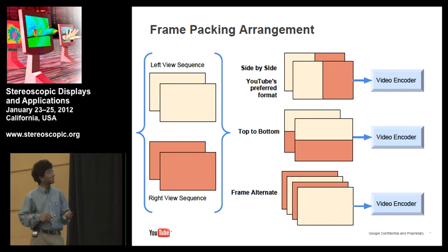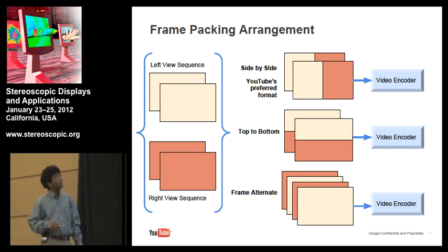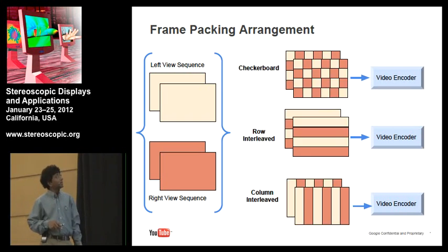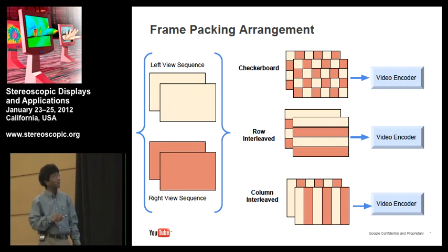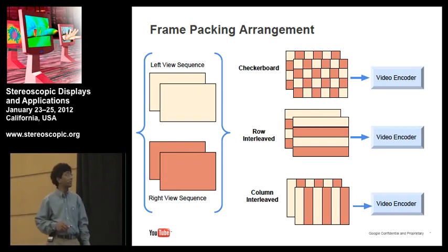A top-bottom arrangement does the subsampling vertically as opposed to horizontally for side-by-side. Side-by-side, by the way, is YouTube's preferred format. There is also frame alternate, where you double the frame rate and have left and right views sent together — in this case there is no resolution loss. Other arrangements include checkerboard, which uses a quincunx sampling grid to get a checkerboard pattern with the left and right views combined; row interleaved; and column interleaved. These are all the possible frame packing arrangements.